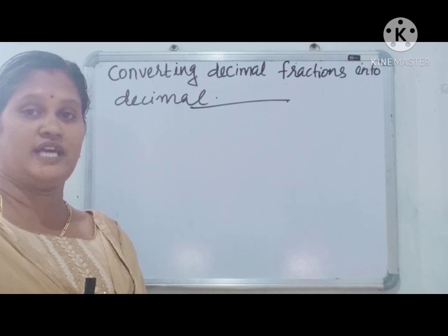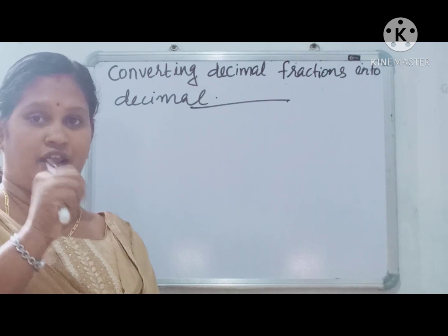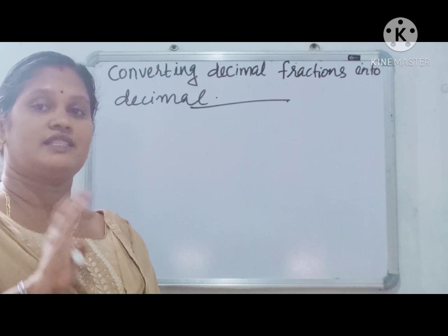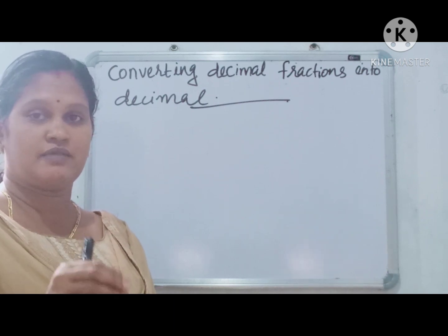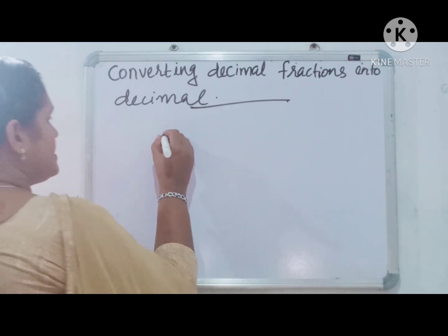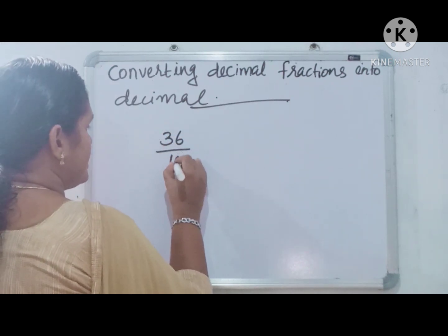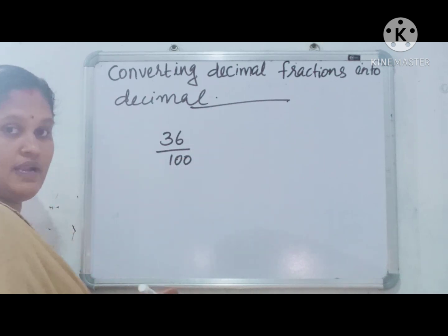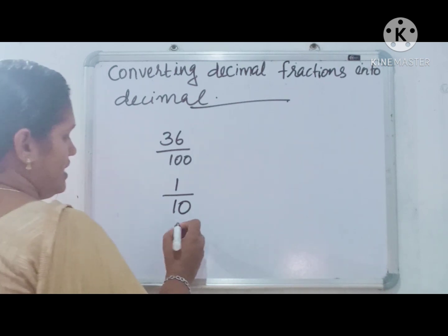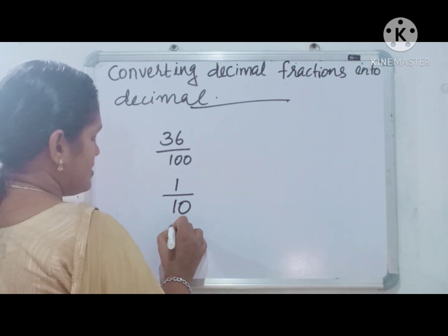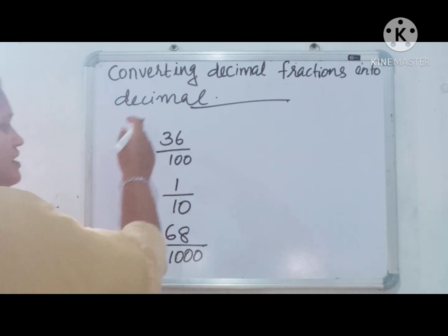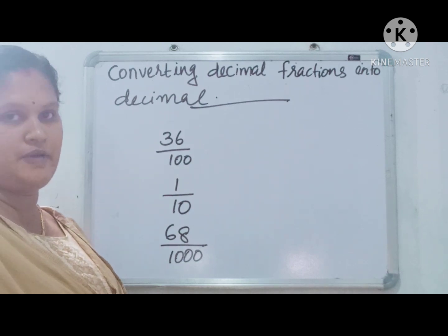We already know that the decimal fraction is a fraction with denominator 10, 100, 1000, etc. That means 1 followed by zeros. Here 36 by 100 is an example of decimal fraction. 1 by 10 is a decimal fraction. The next step, 68 by 1000. These fractions are called decimal fractions.